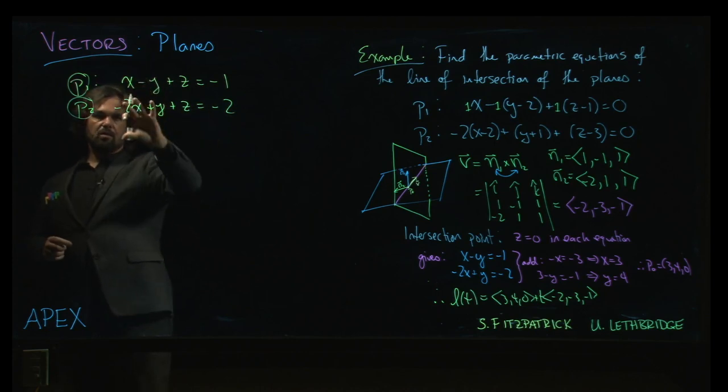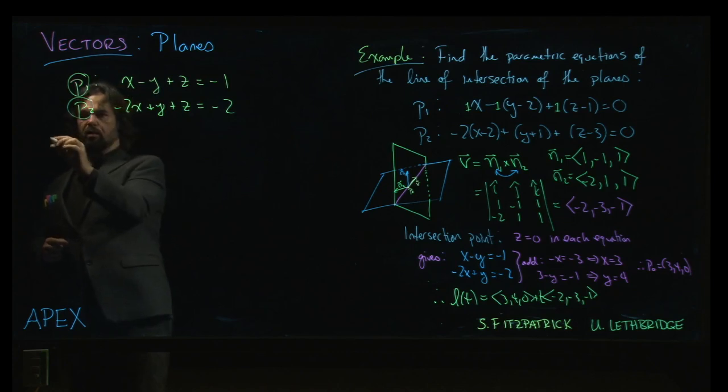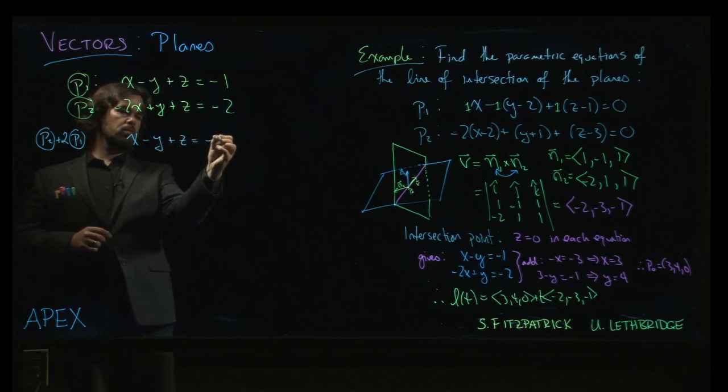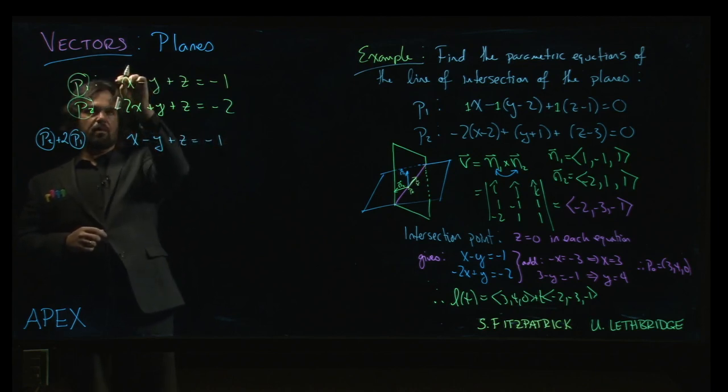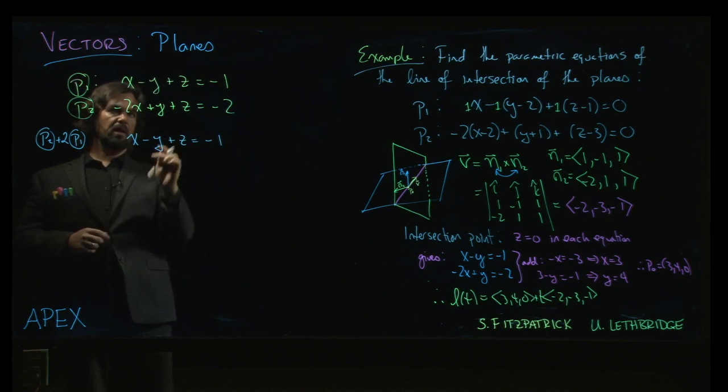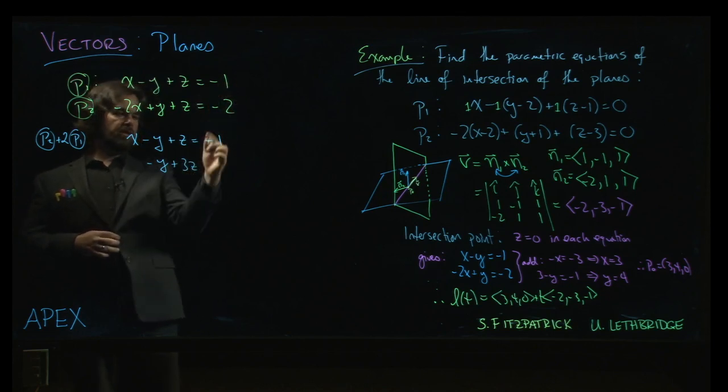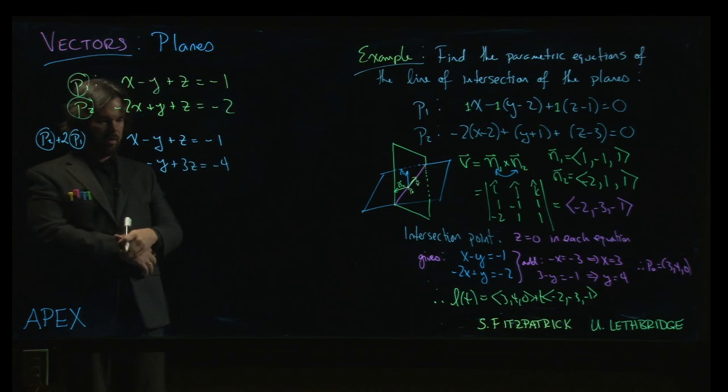And the way you proceed is you first eliminate the variable on the far left from one of the two equations. So what we're going to do is take the P2 equation and add 2 times the P1 equation. So it's going to be 2x added to minus 2x gives me 0. And then minus 2y added to y will give me minus y. 2z added to z will give me 3z. Minus 2 added to minus 2 gives me minus 4.